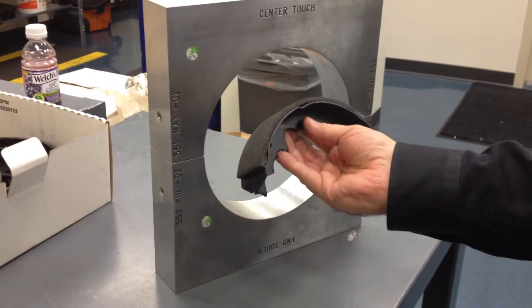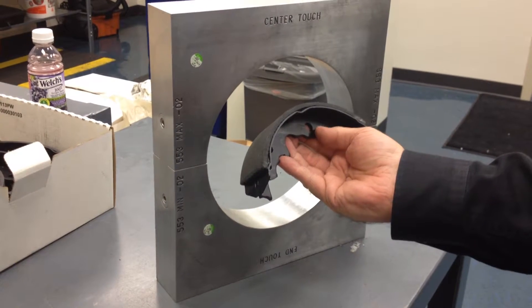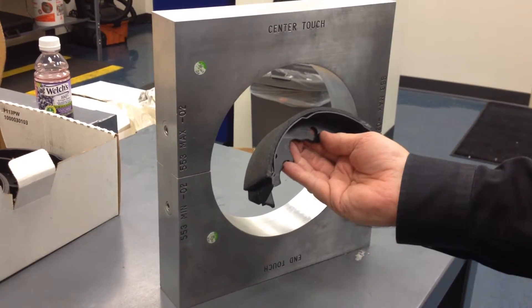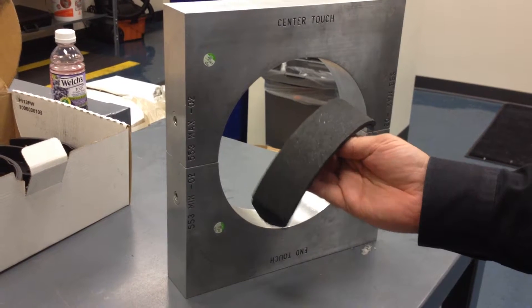What we're showing you here is a radius gauge for the 553 shoes. There are two sides of the gauge that we're illustrating here.